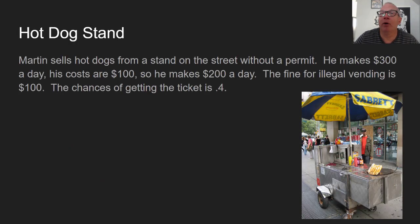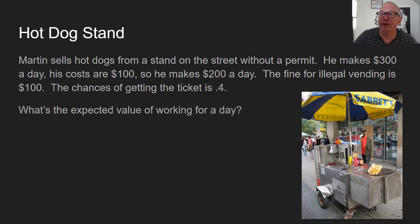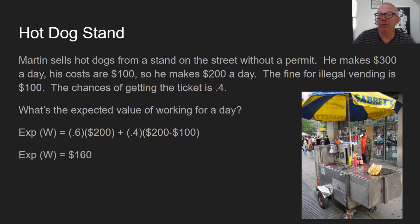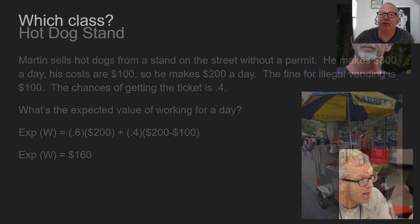Martin sells hot dogs from a stand without a permit. He makes $300 a day, his costs are $100, so he nets $200 a day. The fine for illegal vending is $100, and the chance of getting a ticket is 40%. The expected value of working for a day is a 60% chance of netting $200 plus a 40% chance of netting $200 minus $100. That weighted average works out to $160 — so it's a good proposition for Martin and he can still make money.